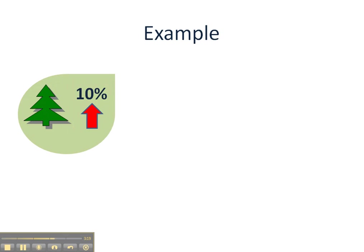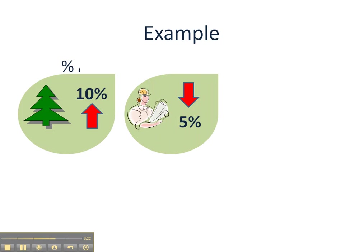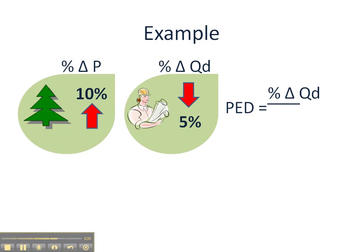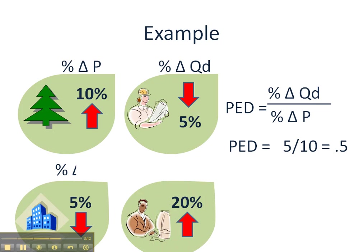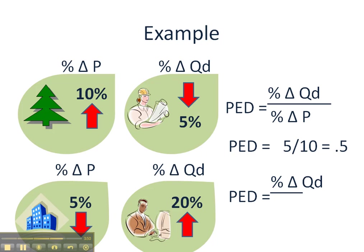Here's a quick example. If the price of lumber rises by 10% and the quantity demanded falls by 5%, then the price elasticity of demand for lumber is calculated as percentage change in quantity demanded divided by percentage change in price — that's 5 over 10, which equals 0.5. In a second example, if rental space for offices falls by 5% and the quantity demanded increases by 20%, then the price elasticity of demand for office space is calculated at 4, since 20 divided by 5 equals 4.